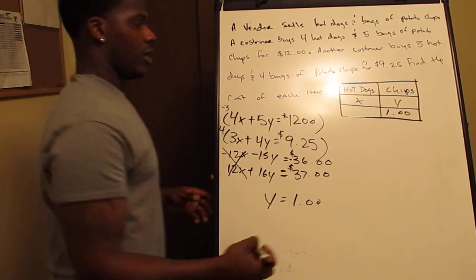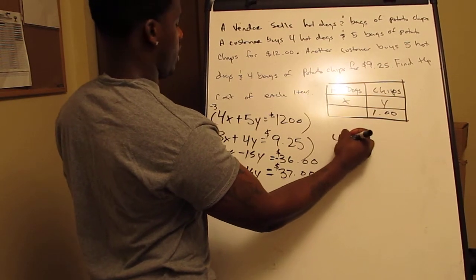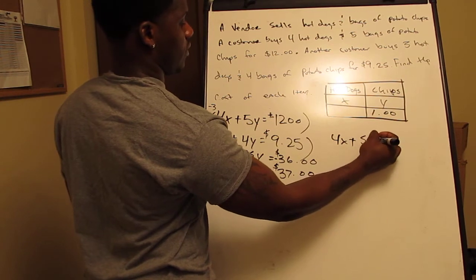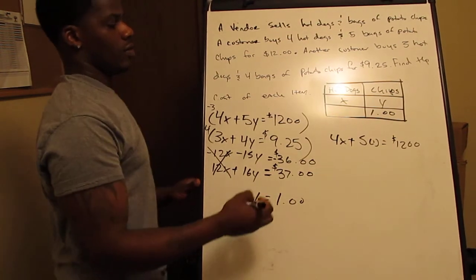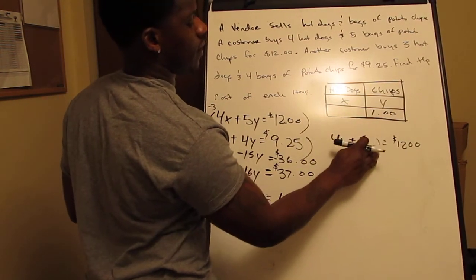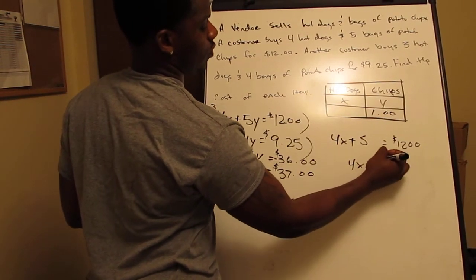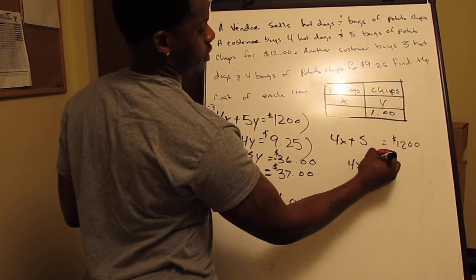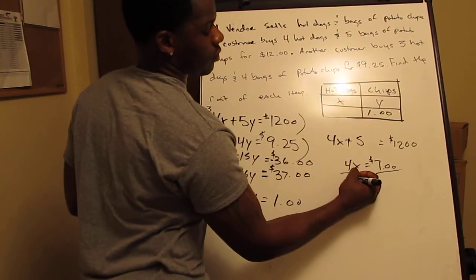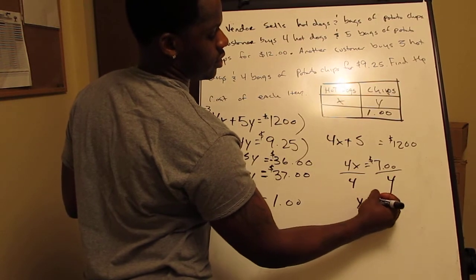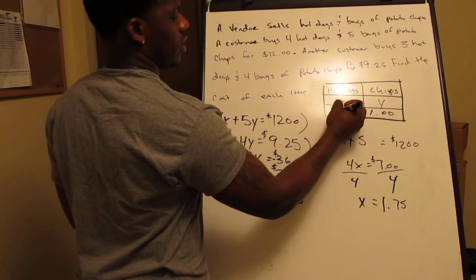Now we substitute back into the original equation: 4X plus 5 times 1 equals $12. We know 5 times 1 is 5, so moving it to the other side gives 4X equals $7. Dividing both sides by 4, X equals $1.75. Hot dogs are $1.75.